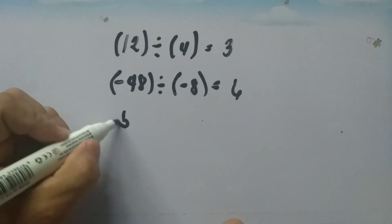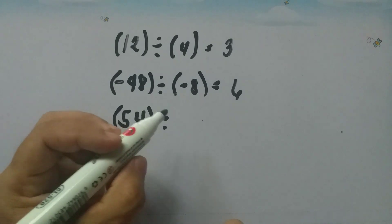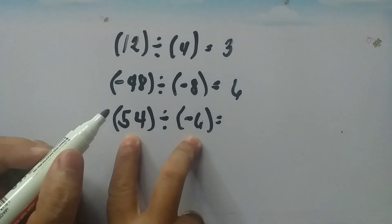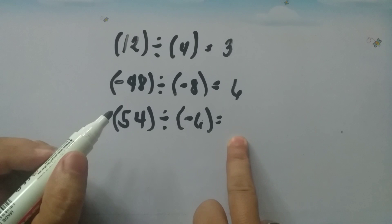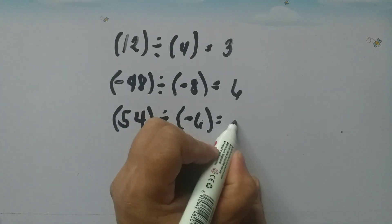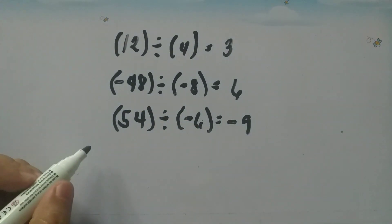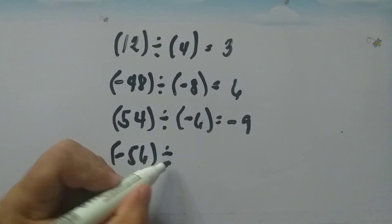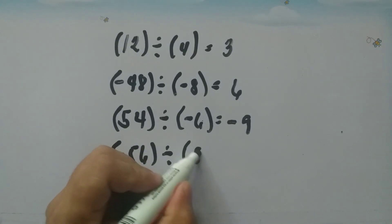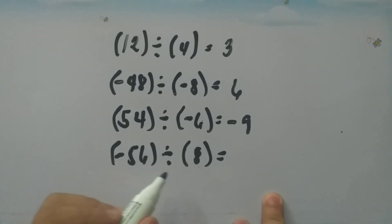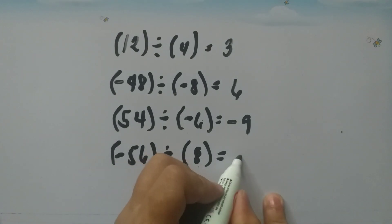Next, we have 54 divided by negative 6. These two numbers are of different signs, therefore the quotient is a negative number. 54 divided by negative 6 equals negative 9. Next, we have negative 56 divided by positive 8. These numbers are also of different signs, therefore the quotient is negative, so negative 56 divided by positive 8 is negative 7.